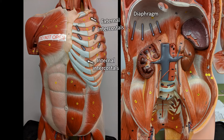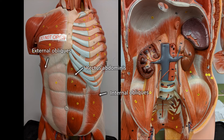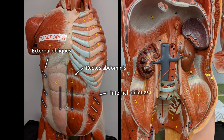All of the muscles pictured here — the rectus abdominis, internal obliques, and external obliques — can pull the body forward, so they cause flexion of the vertebral column. The external and internal obliques, because they run obliquely or diagonally, also cause a twisting motion — twisting of the spine, or lateral flexion of the spine.